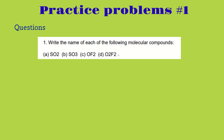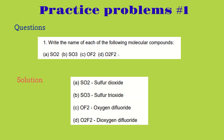For SO2 — S is sulfur and O is oxygen — this is sulfur dioxide. For SO3, S is sulfur and there are three oxygens, so it's sulfur trioxide. For OF2, we have oxygen and fluorine, so it should be oxygen difluoride. For O2F2, we have two oxygens and two fluorines, which gives us dioxygen difluoride. The answers confirm: SO2 is sulfur dioxide, SO3 is sulfur trioxide, OF2 is oxygen difluoride, and O2F2 is dioxygen difluoride.